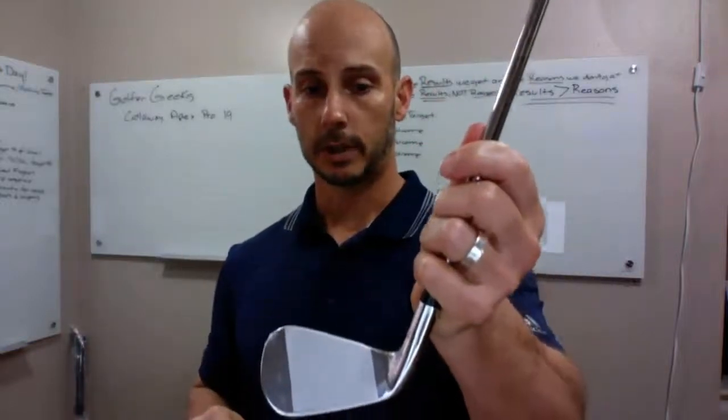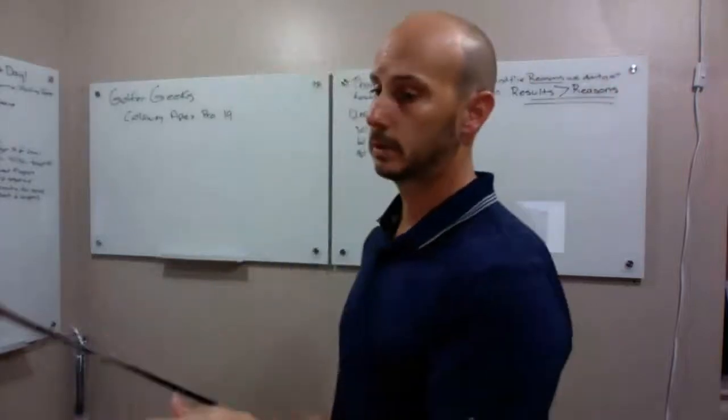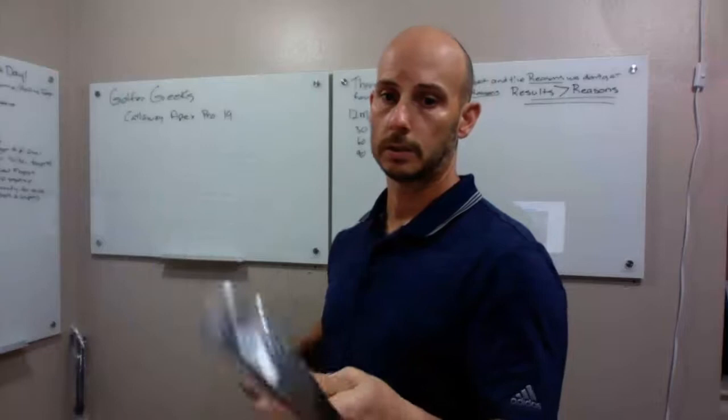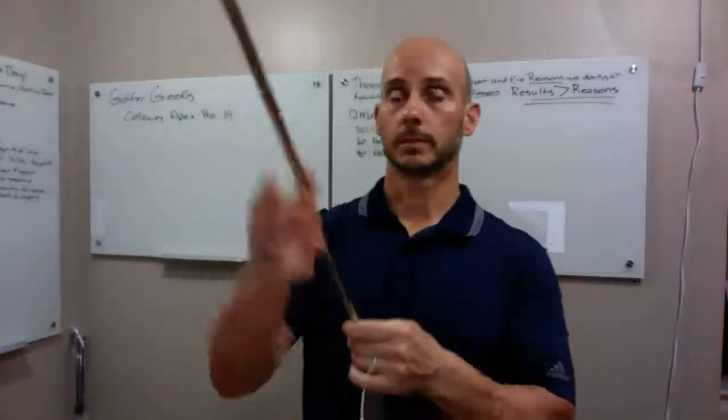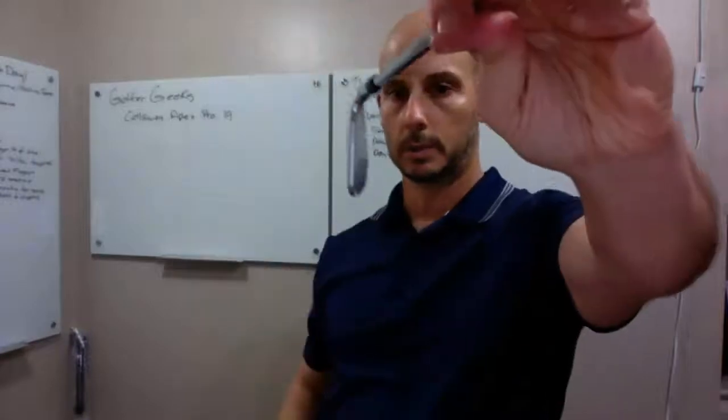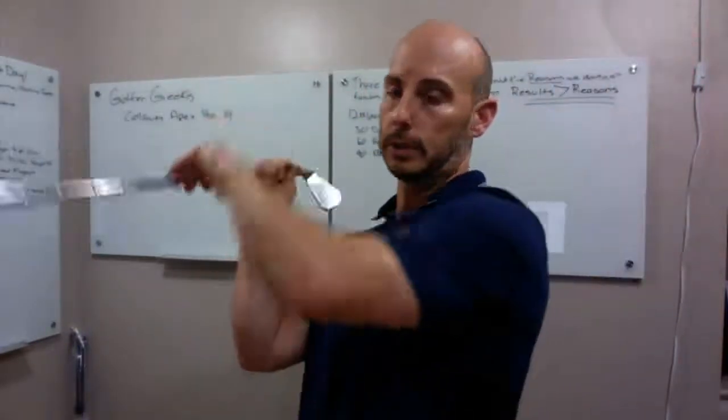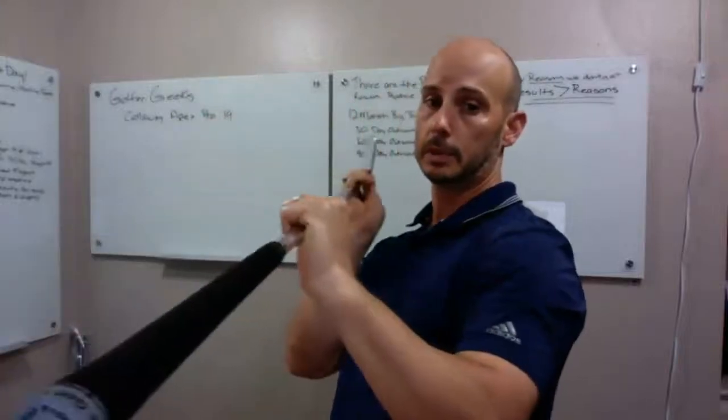So these are going to have less offset, especially since they're the pros, than normal irons. See there, see if I can get you an image or look at the top line. So what you're going to see when you're looking down at the club. And that's not really going to... maybe like this.